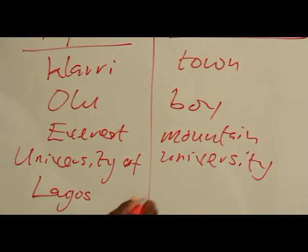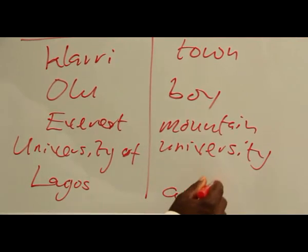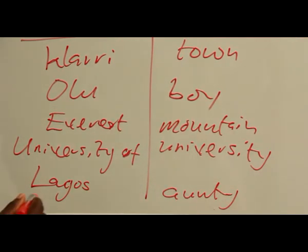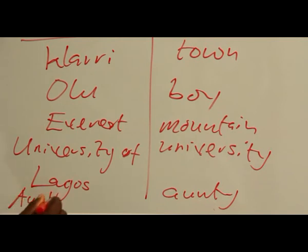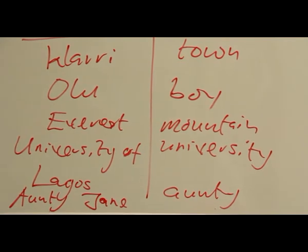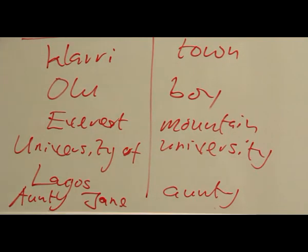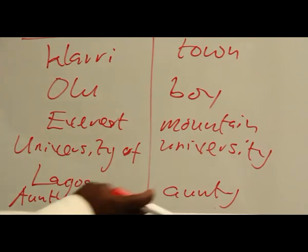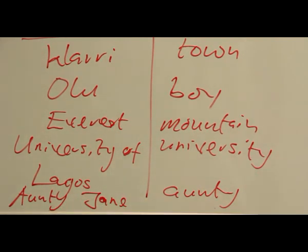We've also discussed something like if you say auntie, that is a common noun. But if you say, for example, Auntie Jane, then this is proper, with auntie becoming a title for Jane. That's the point. But the other one is common. Although sometimes those titles can stand alone and still be proper, depending on the weight attached to them.